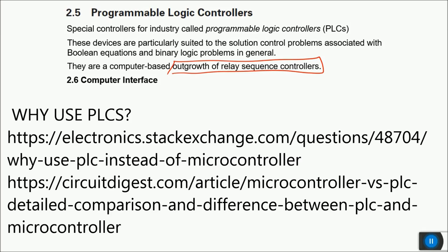Microcontrollers use lower-level programming languages like C, Assembly, or Python, without graphical interfaces. PLCs run a real-time operating system (RTOS) that accepts inputs in real-time and provides outputs in real-time, making it very easy to interface devices with PLCs compared to microcontrollers.